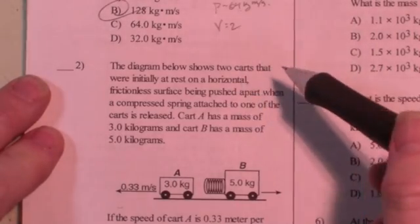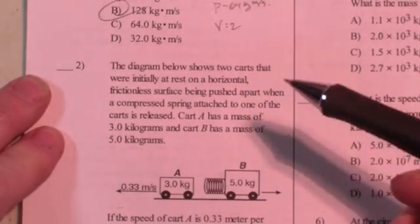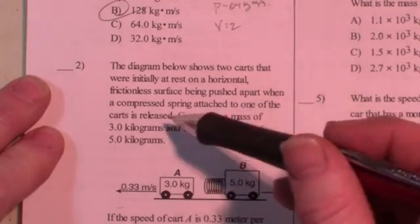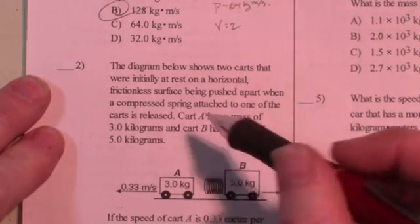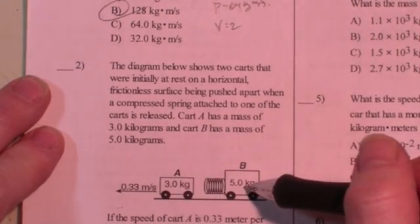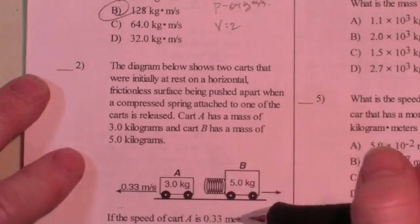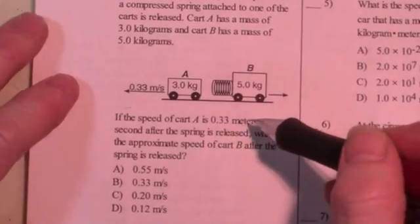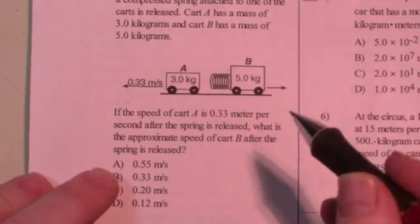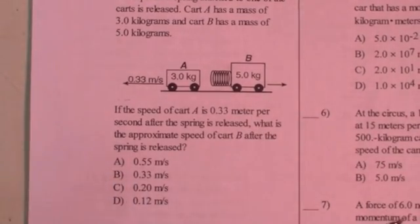Question 2, the diagram shows two carts that were initially at rest on a horizontal frictionless surface being pushed apart when a compressed spring attached to one of the carts is released. Cart A has a mass of 3 kilograms, cart B 5 kilograms. If the speed of cart A is 0.33 meters per second after the spring's release, what's the approximate speed of cart B? Well, this is a conservation of momentum.